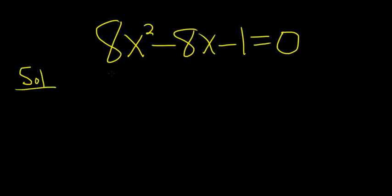The first thing you want to do when completing the square is get all the x's on one side by themselves. We're going to add 1 to both sides, so plus 1 plus 1. So we have 8x² - 8x = 1.